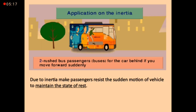Why do passengers rush backwards? To resist the sudden motion — keeping the state of rest for passengers. We also have a question here: give the reason for passengers rushing backwards when the bus suddenly moves. The answer is: due to the inertia force that maintains the state of rest.